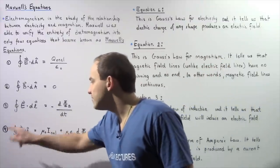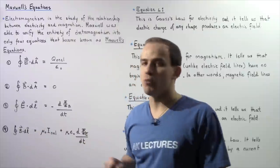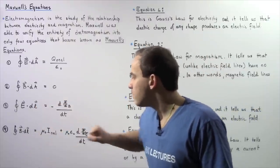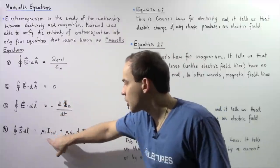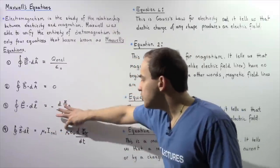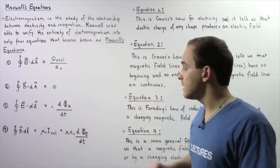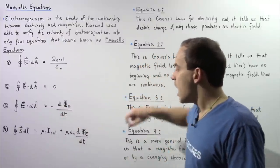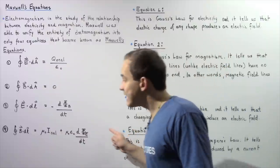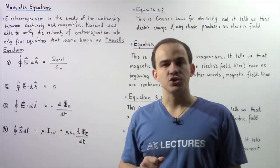The closed integral of the magnetic field vector B and our infinitely small displacement dL is equal to term one: μ₀ multiplied by the electric current enclosed, plus the second term: μ₀ multiplied by ε₀ multiplied by the derivative of our electric flux with respect to time. This is the general form of Ampere's law.